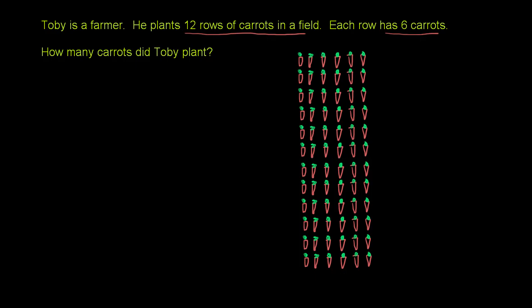And let's number this. So they tell us each row has 6 carrots. 1, 2, 3, 4, 5, 6. They tell us he plants a total of 12 rows. 1, 2, 3, 4, 5, 6,